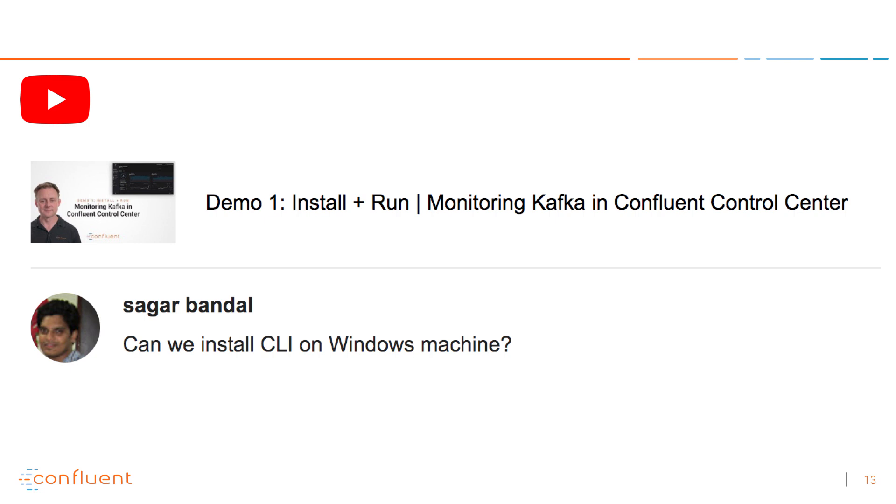Another question, this time from the monitoring Kafka using Confluent Control Center video. The demo used the Confluent CLI, so Sagar Bandai asked: can we install Confluent CLI on a Windows machine? I asked Konstantin, our lead CLI developer, and he said you can try. You'll need to run Bash on Windows, which is available — the GNU project has GNU Bash for Windows. But we've never tested it, so there is some possibility you will run into issues. If you do, let us know, though we may not have Windows internally to reproduce them. But definitely give it a try — maybe it will just work straight out of the box.